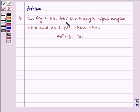In figure 6.53, ABD is a triangle right angled at A and AC is perpendicular to BD. Show that AC² = BC · DC.